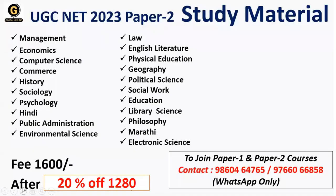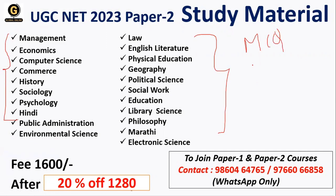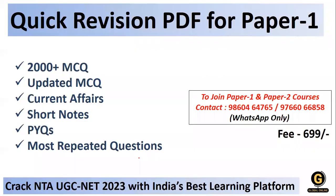Global Online has come up with study material for Paper 2 consisting of MCQs and notes for subjects listed on screen. To get a copy, contact us on the given WhatsApp number. The fee is Rs. 1600 but with a 20% discount it is Rs. 1280. For Paper 1, we have a quick revision PDF with 2000+ updated MCQs, current affairs, short notes, previous year questions, and most repeated questions, available for Rs. 1699 via WhatsApp.